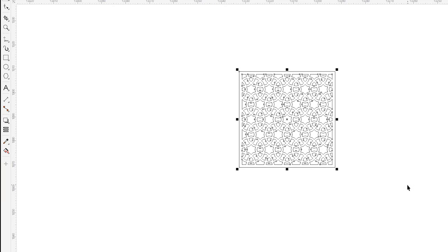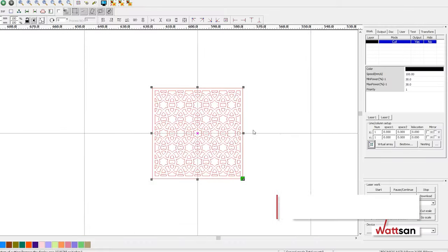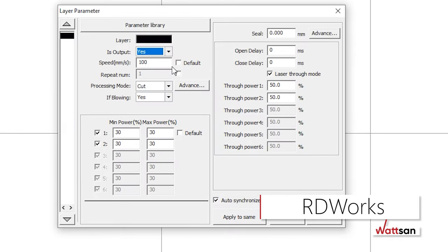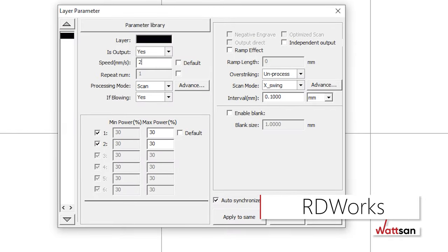The first step is the preparation of the file. Download it to the RDWorks program. Set the necessary parameters for high-quality engraving.